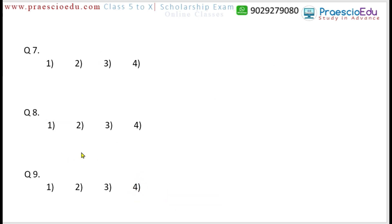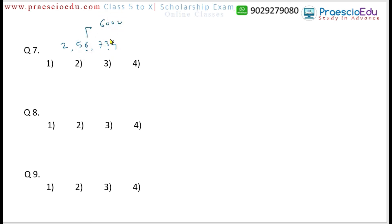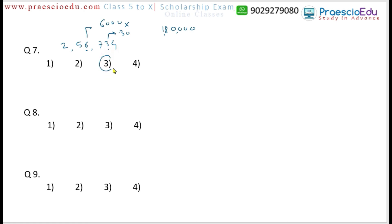Question number 7: What is the product of the place values of digits 3 and 6 in the number 2,56,734? Here digit 6 is at the thousands place, so its place value is 6,000. Digit 3 is at the tens place, so its place value is 30. Product: 6,000 × 30 — the zeros carry and 3 × 6 = 18 — giving 1,80,000. This is mentioned in option number 3.